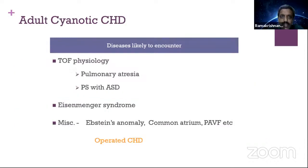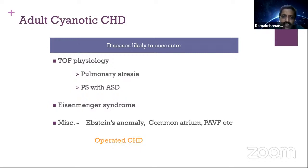Adults with cyanotic congenital heart disease — what are we likely to encounter in an examination? Most commonly TOF or TOF-related physiology, various conditions of TOF physiology, variants like pulmonary atresia, or rarely PS with ASD. The second group is Eisenmenger syndrome. The third group, less common, is Epstein's anomaly. TOF physiology, palliated surgical patients, operated CHD, or Eisenmenger syndrome — these are the diseases likely to be encountered.